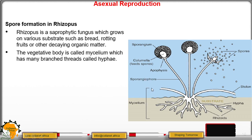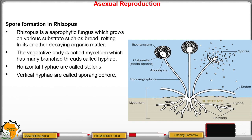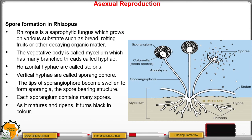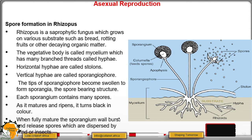This is a structure of Rhizopus species. The vegetative body is called the mycelium, and it has many branching structures called hyphae. The horizontal hyphae are called stolons, running across, and the vertical ones running upward are called sporangiophores. The sporangiophore swells at the tip to form a sporangium (singular) or sporangia (plural). These sporangia contain spores — the reproductive structures. Each sporangium contains a number of spores, and as it matures it becomes black in color. When fully mature, the sporangium wall bursts and releases spores, which are distributed by wind or insects.